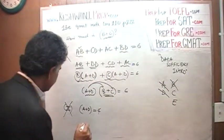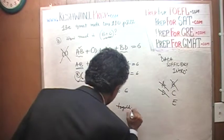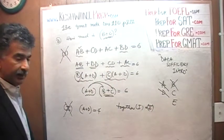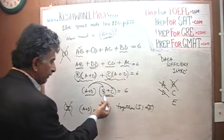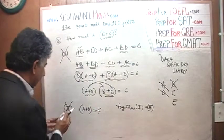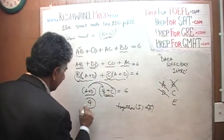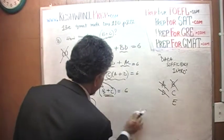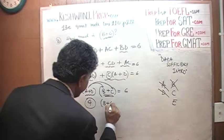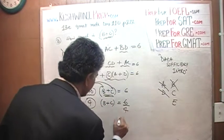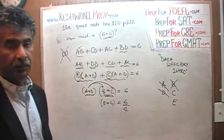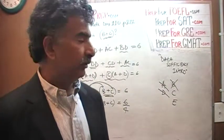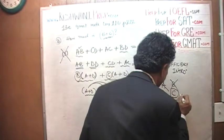But if you put statements 1 and 2 together, now we know that (a plus d) times (b plus c) equals 6, and we know that a plus d is 4. If a plus d is 4, then of course we can figure out what b plus c is — b plus c must equal 6 over 4. Putting them together does the job; individually these two statements are no good. Therefore the answer is C.